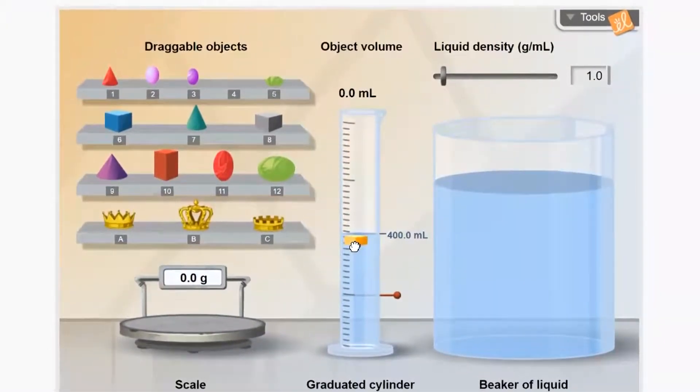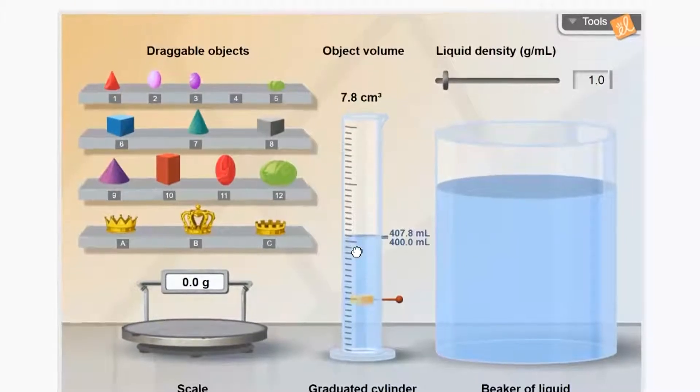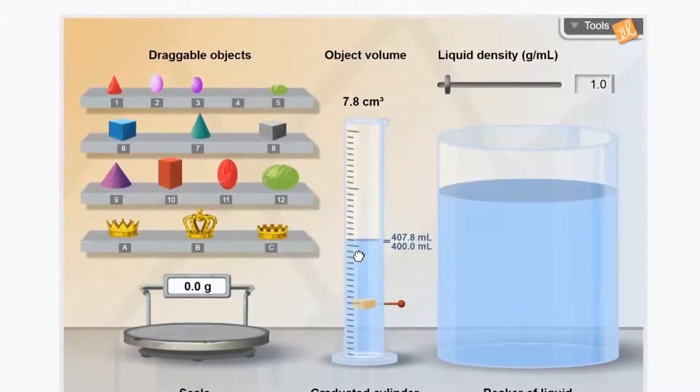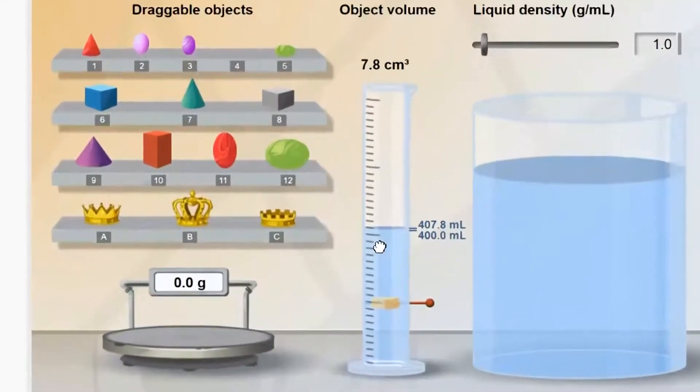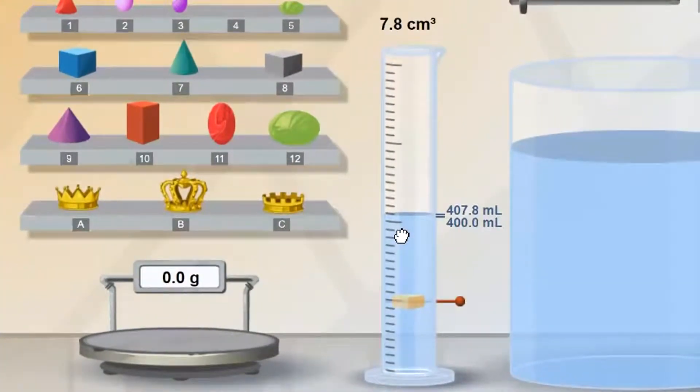Now again, the liquid shows 400 milliliters, but if we release the object, it sinks, and we see that the level of the liquid goes up. It goes up from 400 to 407.8. That is, it goes up 7.8 milliliters. Well, look at this. That means the object is 7.8 cubic centimeters.